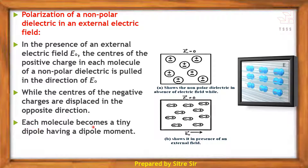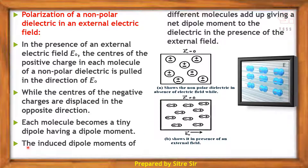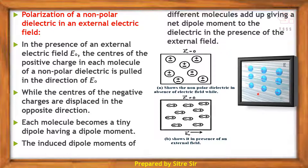Each molecule becomes a tiny dipole having a dipole moment. The induced dipole moments of different molecules add up, giving a net dipole moment to the dielectric in the presence of the external electric field. The individual molecule dipole moments add to give a resultant dipole moment, and the entire substance shows a dipole in the external field.